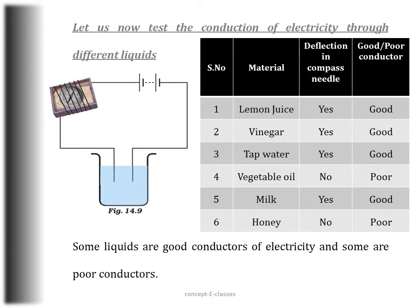When we dip the tester into different liquids, if there is a deflection in the magnetic needle it means the liquid is a good conductor, and if there is no deflection it is a poor conductor. Lemon juice, vinegar, tap water, and milk all show deflection and are good conductors. Vegetable oil and honey show no deflection, so they are poor conductors of electricity.